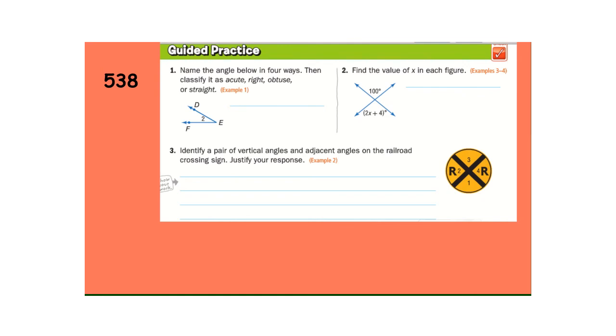Identify a pair. Number 3. Of vertical angles and adjacent angles on the railroad sign here. So, vertical would be 1 and 3, or 2 and 4. Two pair there are vertical angles. 1 and 3 and 2 and 4. Adjacent would be 1 and 2, 2 and 3, 3 and 4, or 4 and 1. Those are all adjacent.